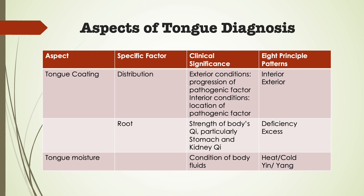A coating that suddenly becomes thick is usually seen when dampness blocks the middle jiao. When exogenous pathogenic factor invades the body, changes in the coating will usually only be seen in the front third of the tongue and the sides of this area. If the coating begins to thicken further towards the center and changes color from white to yellow and starts to dry out, this indicates that pathogenic factor has started to penetrate the interior and begun to generate heat. In interior pathological conditions, the distribution of the coating will indicate where the imbalance is and which organs are most likely affected.